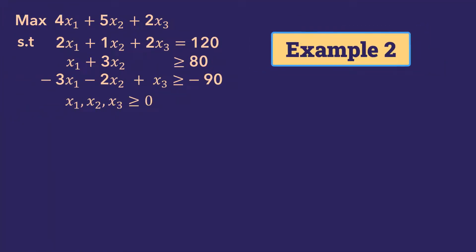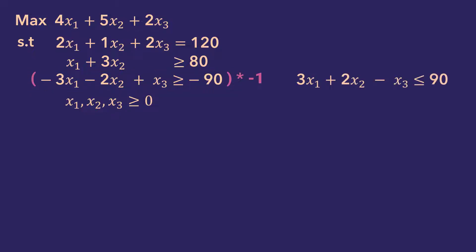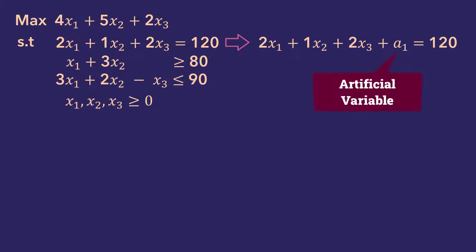Next, consider this maximization LP model. Note that the third constraint has a negative right-hand side. This is not allowed in the initial tableau, so we need to convert the right-hand side to a positive value by multiplying the constraint by minus 1. Doing so, we also change the inequality sign from greater-or-equal to less-than-or-equal. To convert this to tableau form, the procedure requires we add an artificial variable to the equality constraint because, unlike less-than-or-equal constraints, equality constraints do not have any slack. We'll label the artificial variable A1. The artificial variable enables us to create a temporary basic variable for the constraint in the initial tableau, and will be eliminated before reaching an optimal solution.